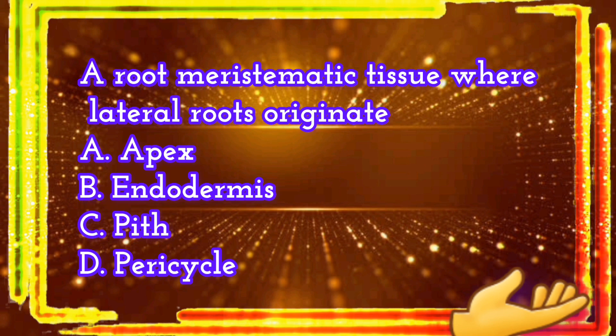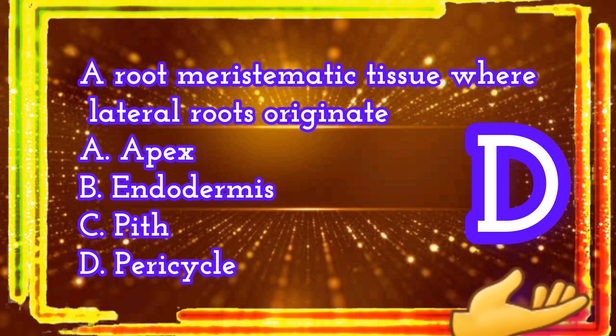A root meristematic tissue where lateral roots originate. A. Apex. B. Endodermis. C. Pith. D. Pericycle. The correct answer is letter D. Pericycle.